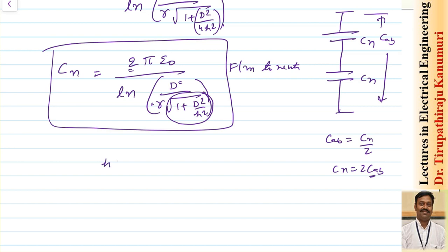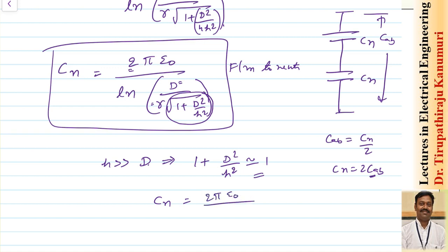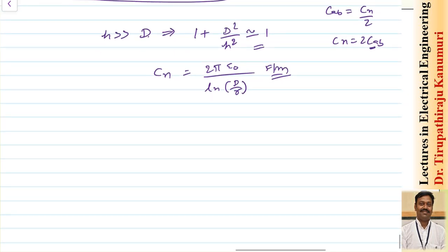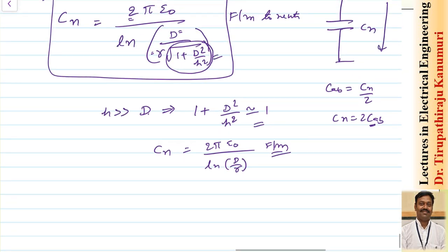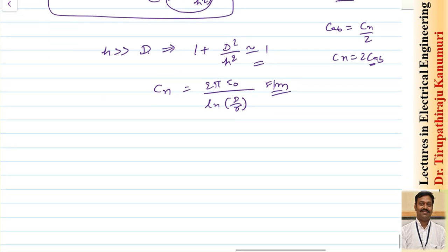Practically what happens is the value of the height is far, far greater than the distance of separation between the conductors. In that case, I can take 1 + d²/h² and approximate it as 1, because the value of h is far, far greater than d. So automatically Cn will become equal to 2π ε₀ over ln of d over r — the standard result. That is why if the height of the tower is more you can neglect it, but if the height of the tower is less then you have to consider this parameter also and multiply r by √(1 + d²/h²).